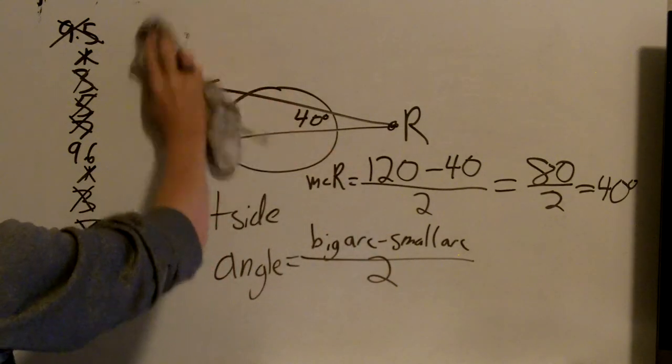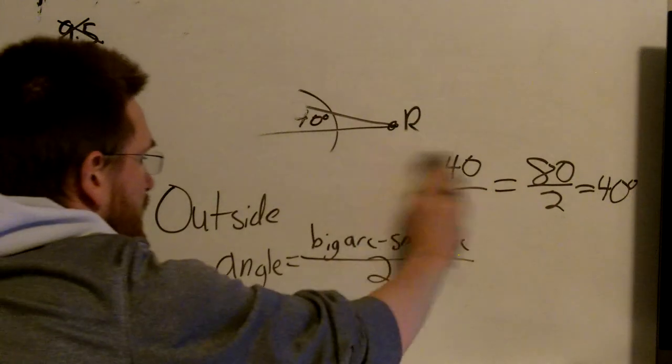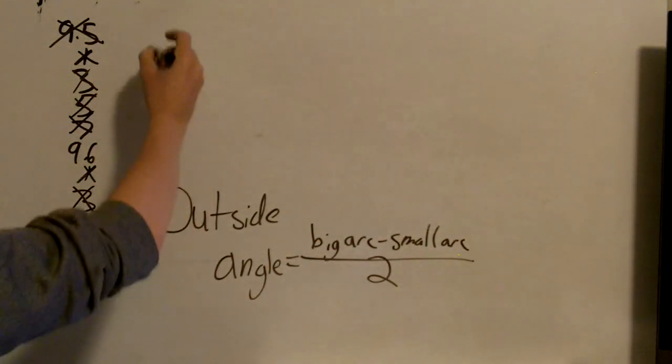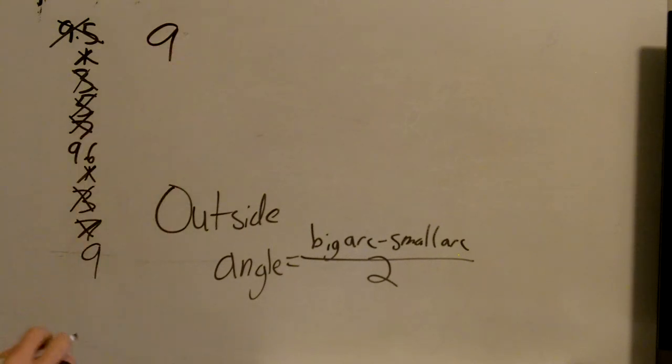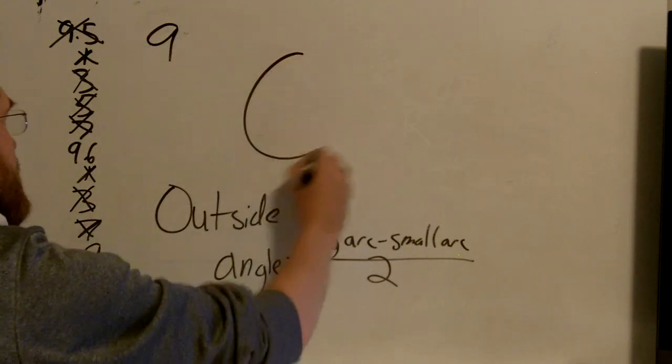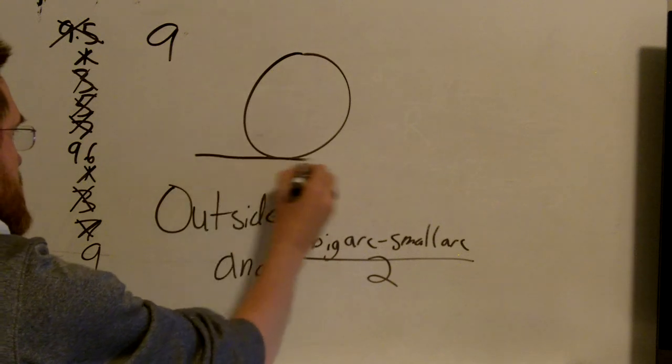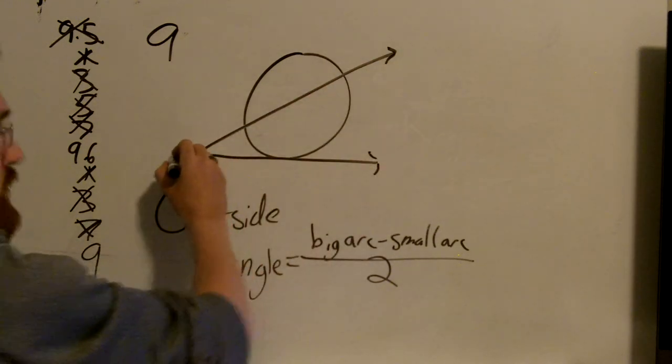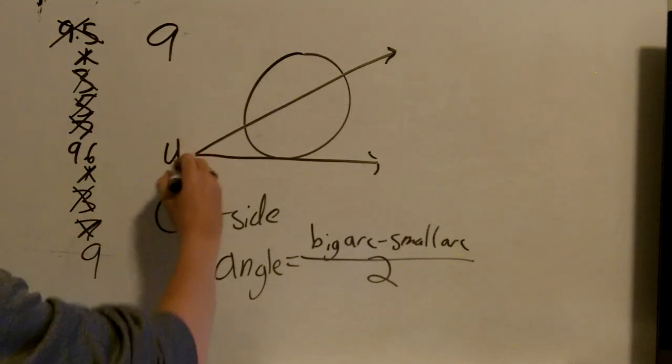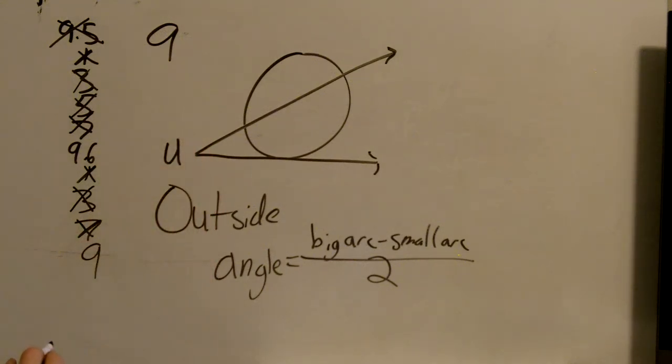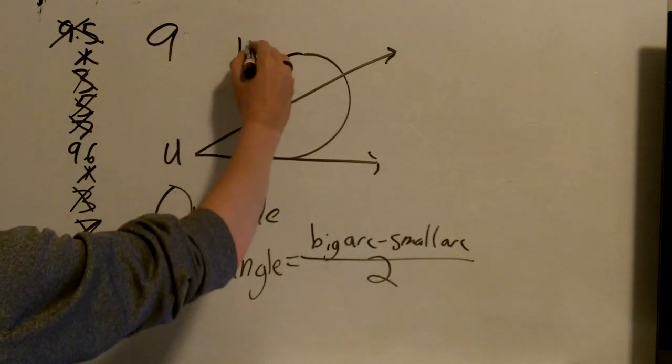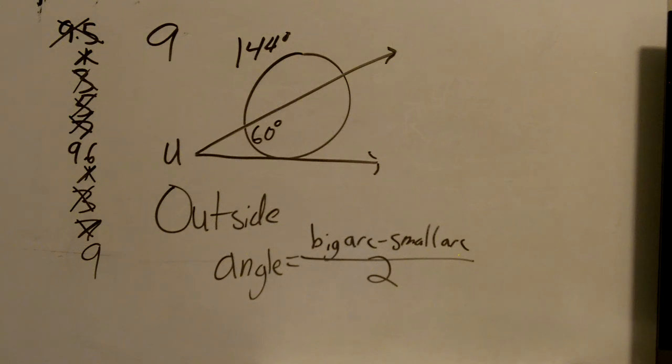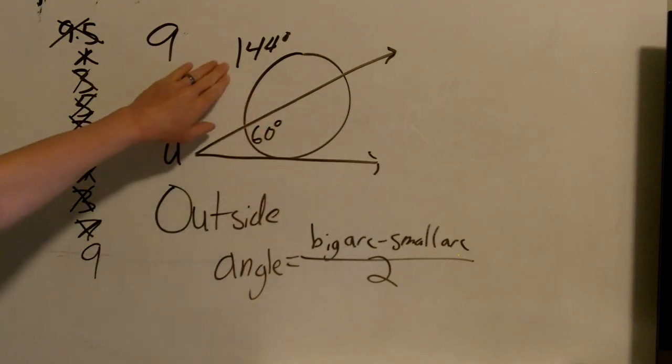Now I'm going to be a little lazy right here and leave the outside up because I know the next one I'm going to do is also an outside. So number 9. We have a circle that looks like this. We have a tangent and a secant. And the angle we want to know is angle U. We know that this is 144 degrees and this is 60 degrees.